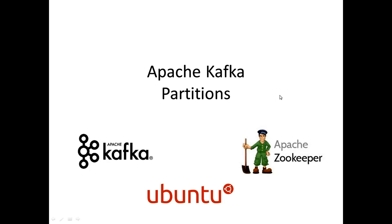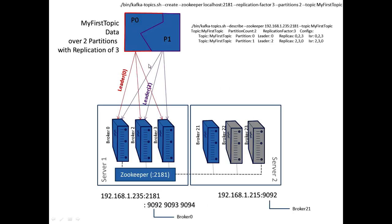We're going to look at Apache Kafka and partitions. The data is going to be spread across two partitions and we're going to have a replication factor of three, which means that those partitions are going to be distributed across a number of brokers, a number of nodes.